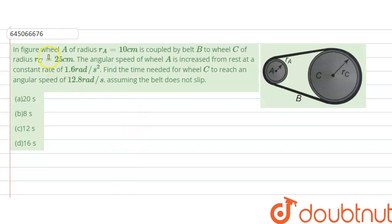In this question, there is a figure where wheel A of radius 10 centimeters is coupled by a belt to wheel C of radius 25 centimeters. The angular velocity of A is increased from rest at a constant rate of 1.6 radians per second squared. Find the time needed for wheel C to reach an angular speed of 12.8 radians per second, assuming the belt does not slip.